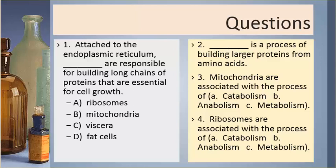Number three. Mitochondria are associated with the process of A. Catabolism. B. Anabolism. C. Metabolism.